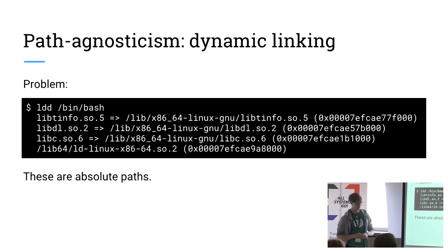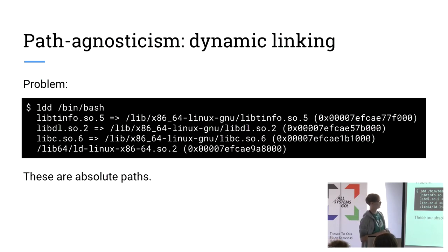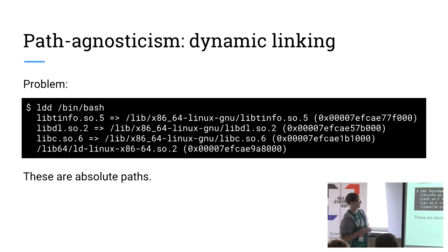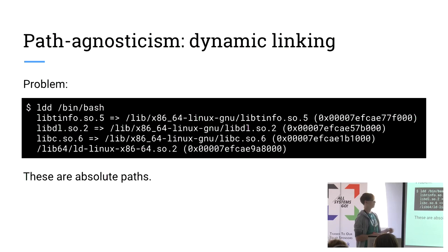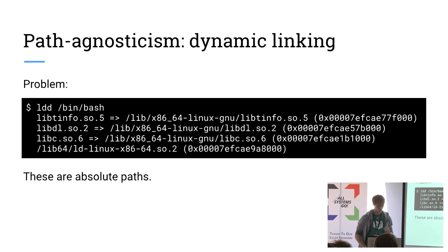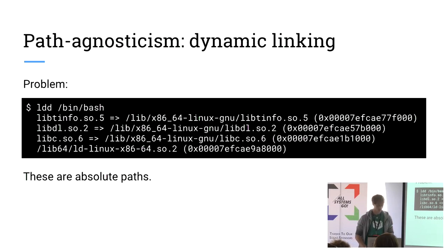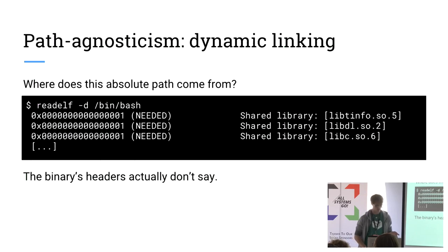What happens when you try to do this in practice with dynamic linking in the world as we know it? If I look at how Bash is linked on my system right now, this is the readout I get. LDD — a lot of people might be familiar with this — is a thing that looks at which dynamic libraries get loaded when you execute a program. On my system, Bash shows these as absolute paths. So right out of the box, because there's a slash here, this is not path agnostic. If I move Bash or any of these libraries, it's not going to work correctly.